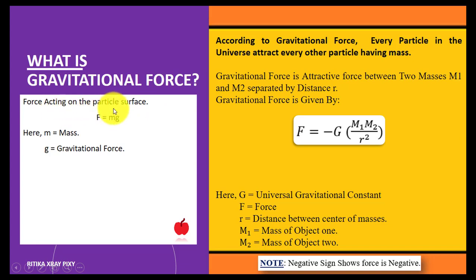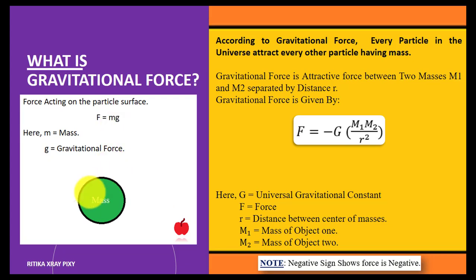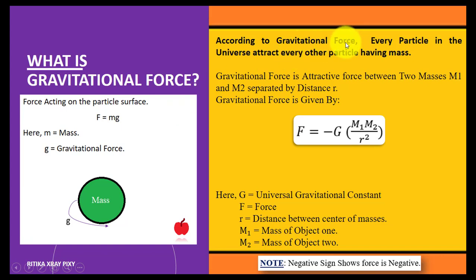What is gravitational force? First, how do we compute force? The force acting on a particle surface is F = mg, where m is the mass and g is the gravitational force. Suppose we have a particle with mass and gravitational force g acting on its surface. According to gravitational force, every particle in the universe attracts every other particle that has mass.